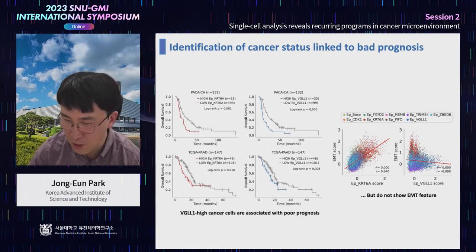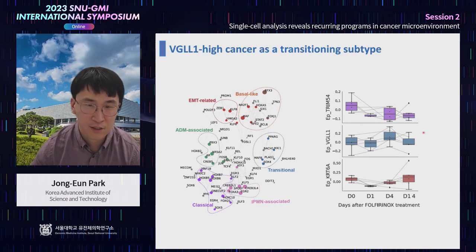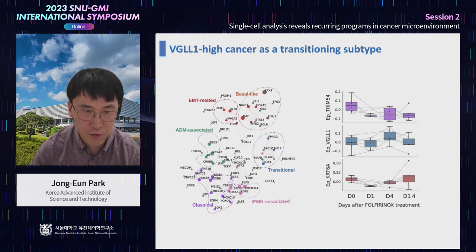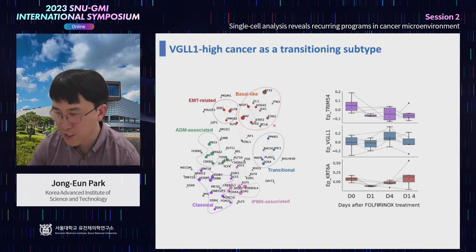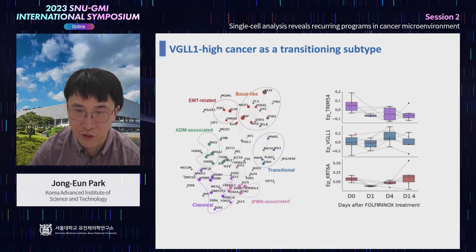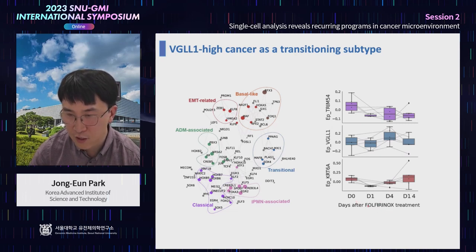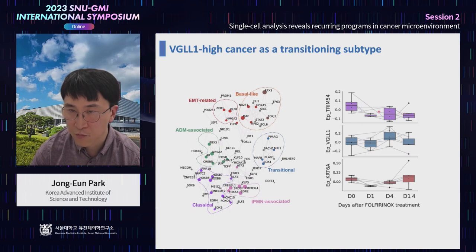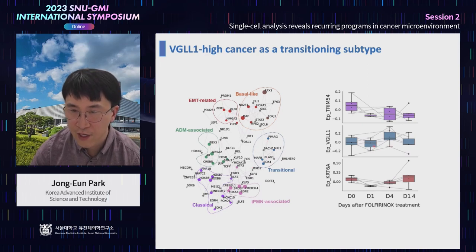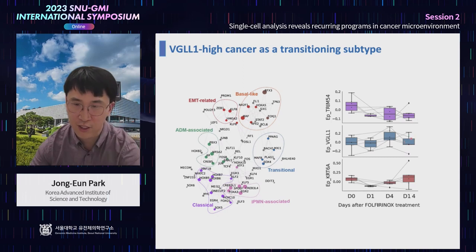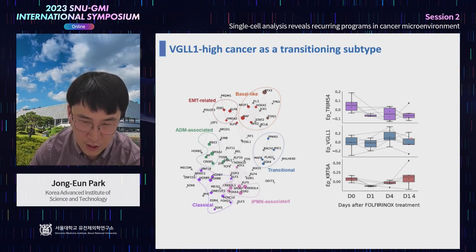We could identify transcription factors responsible for the transition from classical to basal type pancreatic cancer. This could be replicated in vitro by reanalyzing BioClin data where chemotherapy was applied to pancreatic cancer spheroids. Upon chemotherapy, the classical signature goes down and the basal signature goes up. Importantly, the transitional signature we identified actually surges during this transition process and then goes down again, proving that this transitional state can be recapitulated in vitro dynamics.